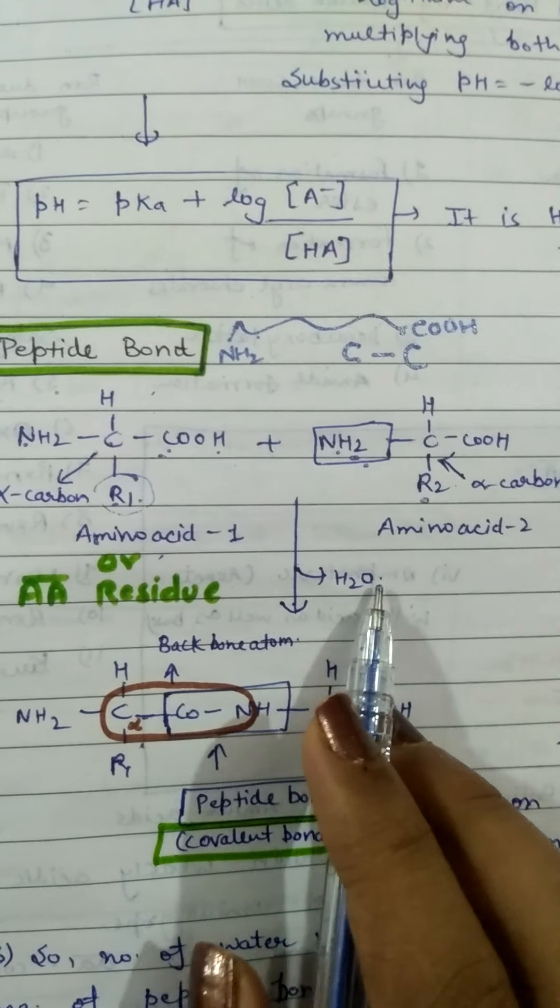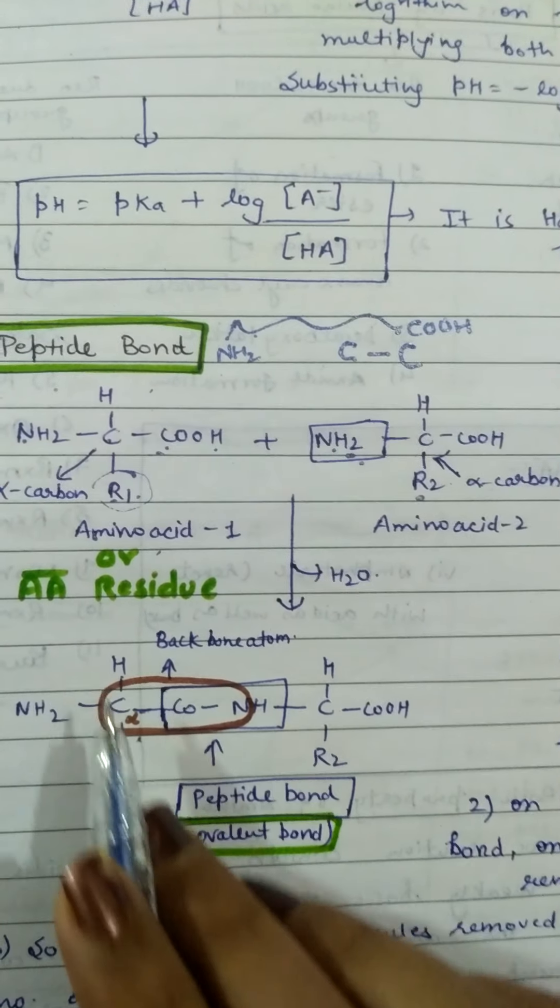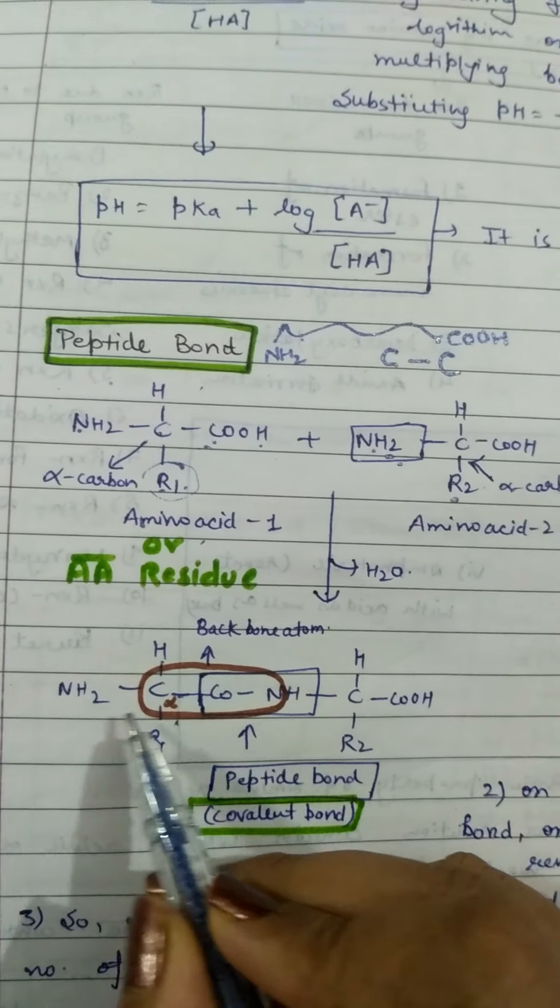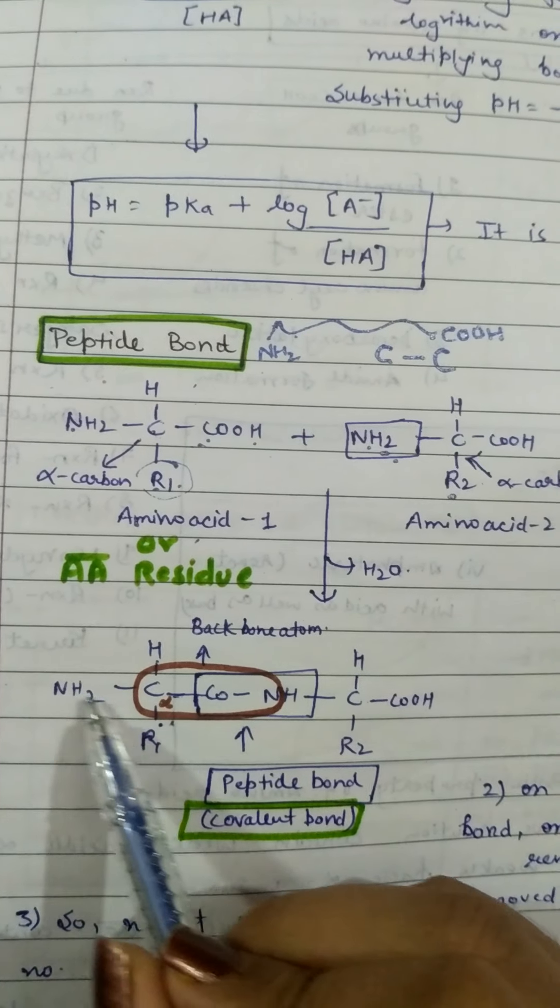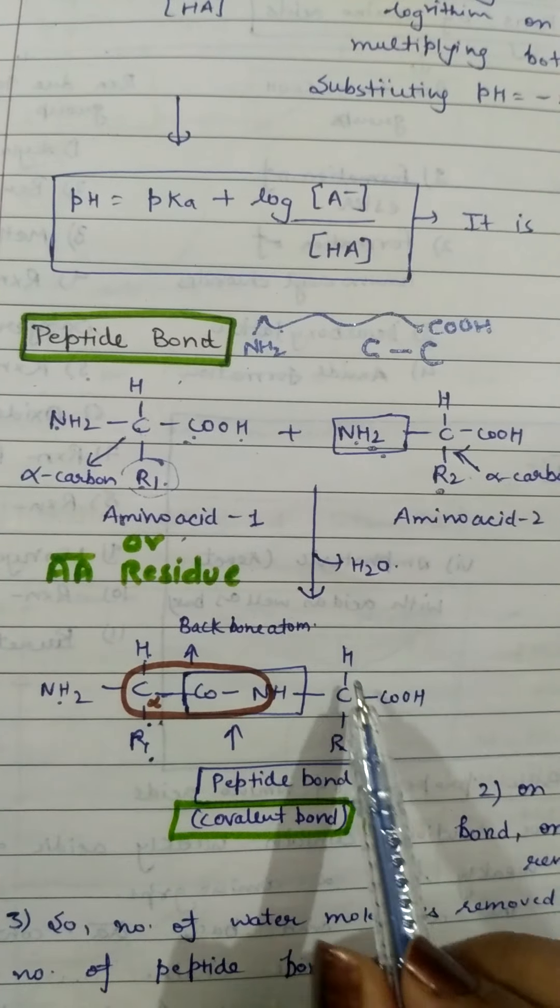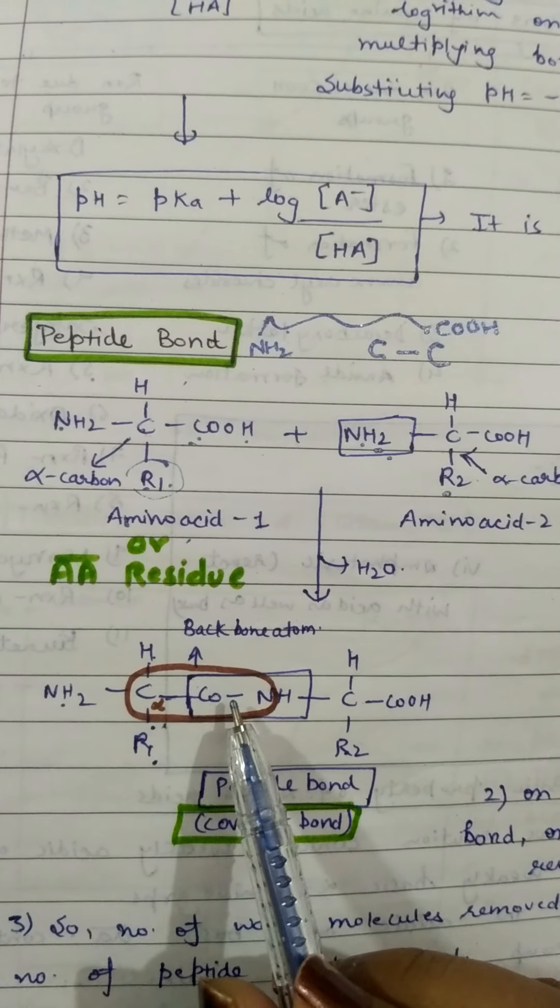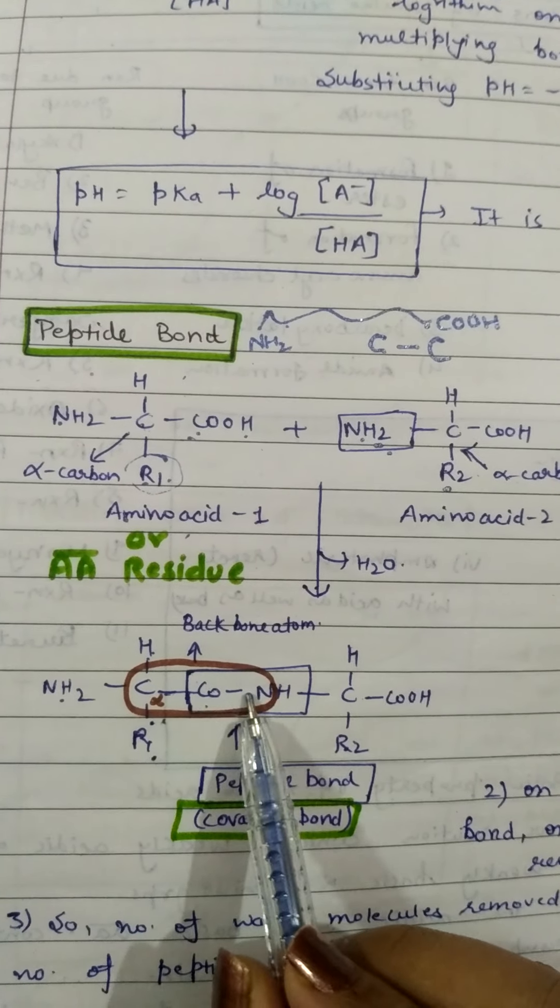This is the amino acid residue. C alpha, NH2, R1, R2 is the side chain. When the water is removed, CO has become NH.